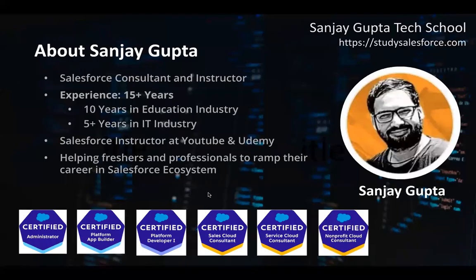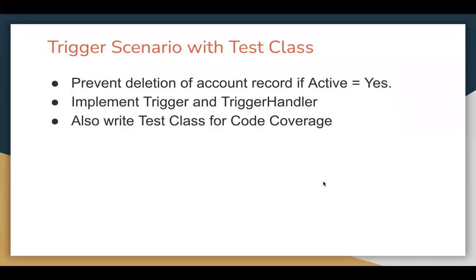Hello everyone, I am Sanjay Gupta. I welcome you on Sanjay Gupta Tech School. In this video, I am going to demonstrate a trigger scenario with the help of a test class. The requirement is we need to prevent deletion of an account record if we are trying to delete any account record where the active field is having value as yes. We need to implement its trigger as well as trigger handler class, and then we need to implement its test class so that we can have proper code coverage.